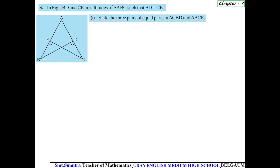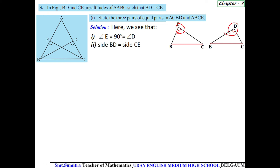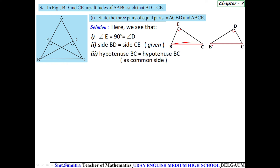Next question: in this picture, state three pairs of equal parts in triangle CBD and triangle BCE. Drawing the two pictures separately: angle E equals angle D — both are 90 degrees. Side BD equals side CE as given. Hypotenuse BC is common to both triangles.